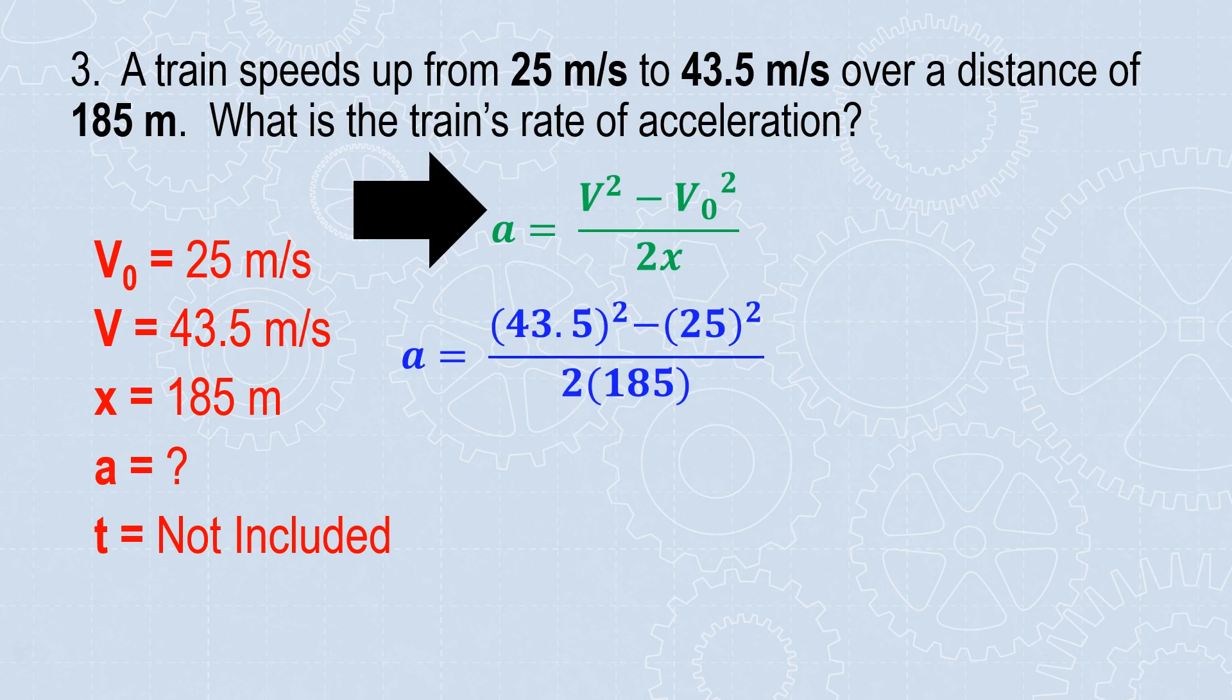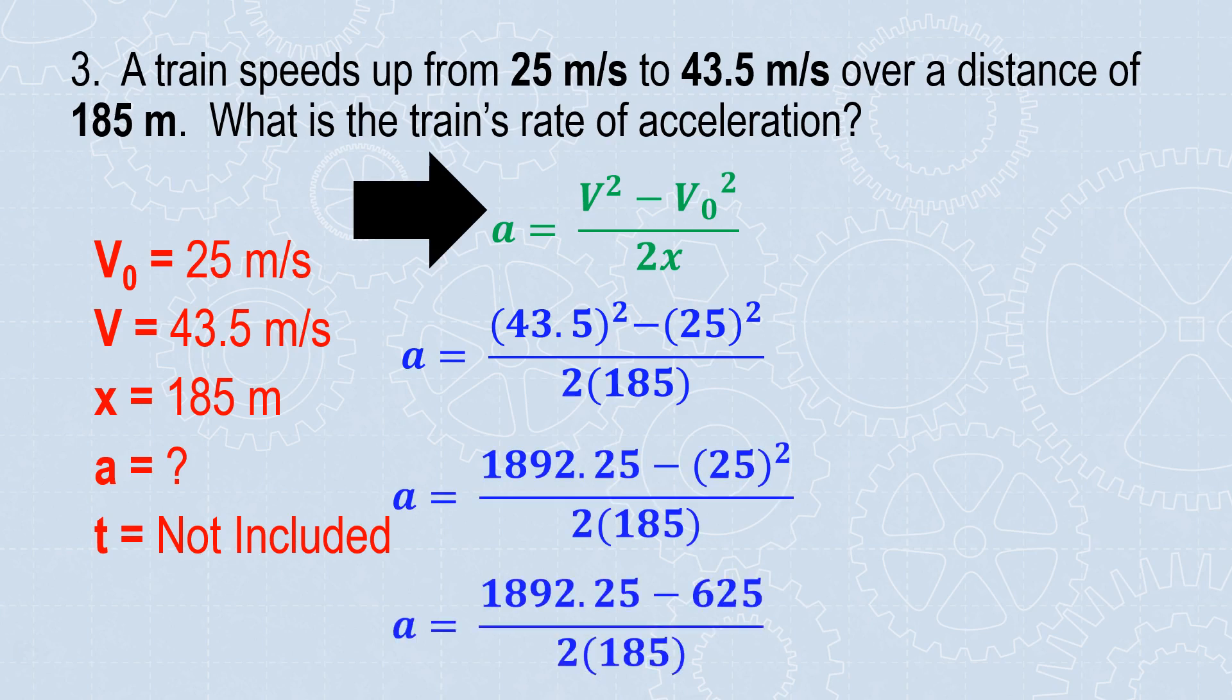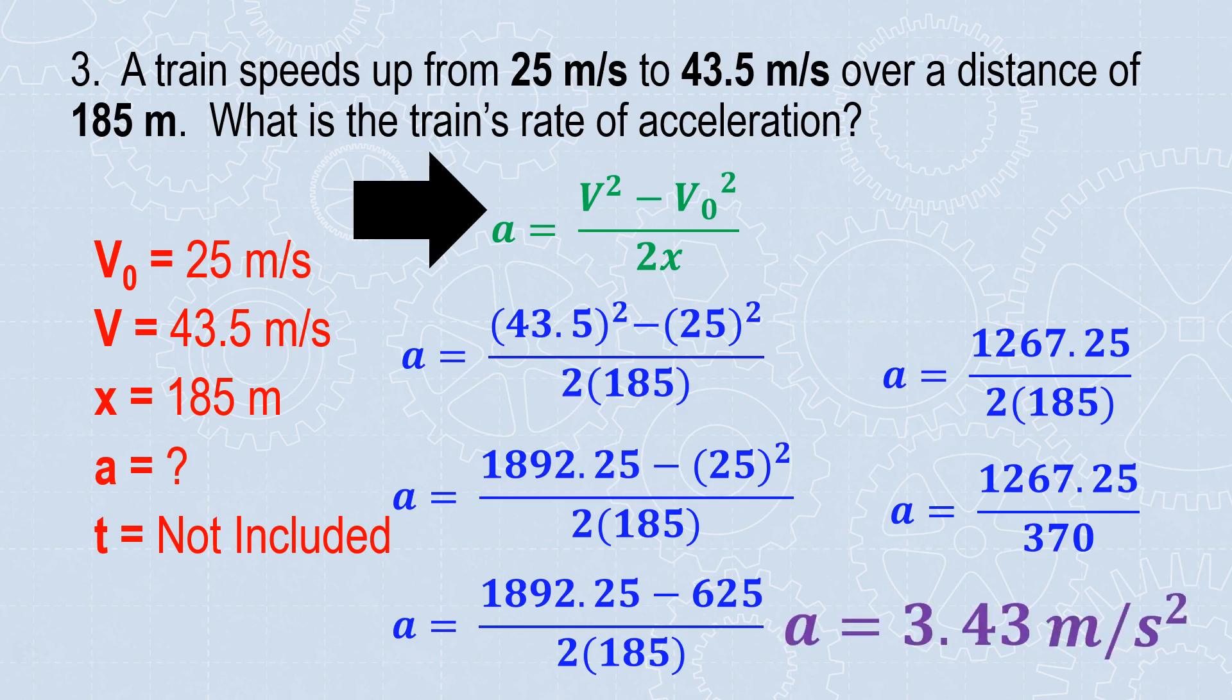To substitute in, I replace each of my variables with a set of parentheses. V is 43.5, so I plug it in there. V sub 0 is 25, so I plug it in there. X is 185, so I plug it in there. Just like before, I simplify the top, simplify the bottom, and then divide. So I'm going to take care of those exponents, and I'm going to subtract. Now I'm going to take care of my denominator. The numerator and denominator almost work like parentheses. You need to do each of them first before you divide them. Finalize your answer with a unit. Acceleration is in meters per second squared.